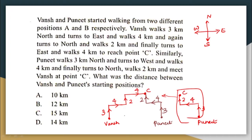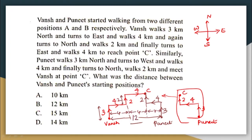The question is: what is the distance between Vansh and Puneet's starting points? Both are meeting at the same point C. If you see the vertical distance, it is 2 on both sides and 3 on both sides. So the starting points of Puneet and Vansh are on the same straight line. Extrapolating the lines, each horizontal segment is 4, so 4 plus 4 plus 4 equals 12. The distance between the starting points of Vansh and Puneet will be 12 km — that is option B.